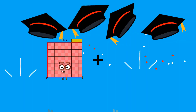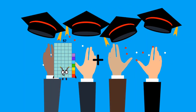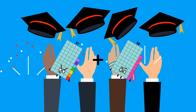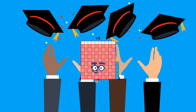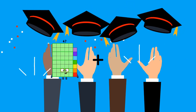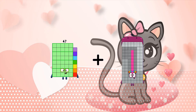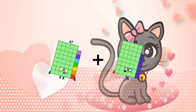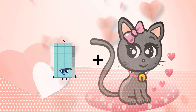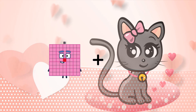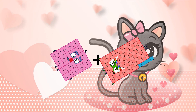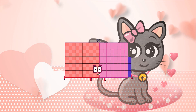57 plus 58 equals 115. 47 plus 46 equals 93. 81 plus 105 equals 186.